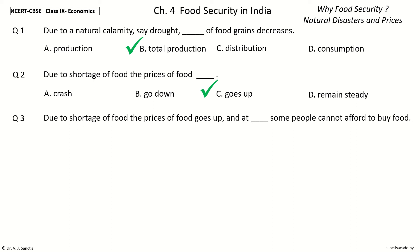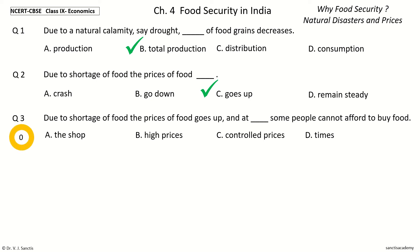And at dash, some people cannot afford to buy food. The options are: the shop, high prices, controlled prices, times. And the answer is high prices. So, due to shortage of food, the prices of food goes up, and at high prices, some people cannot afford to buy food.